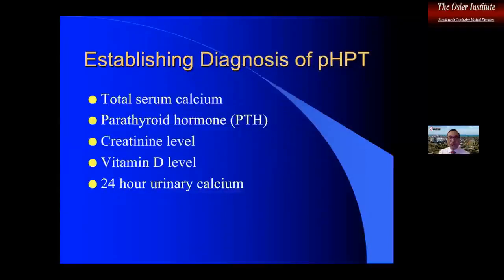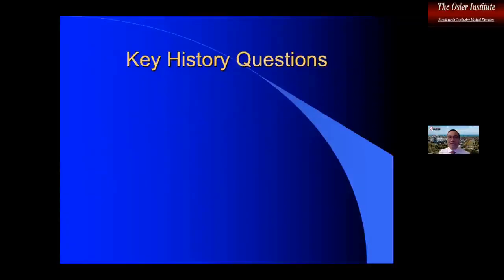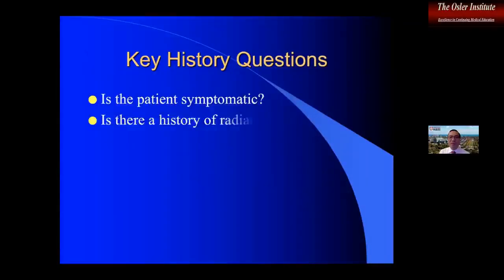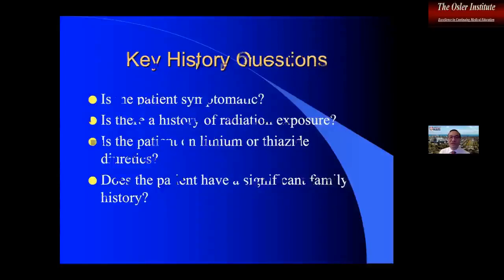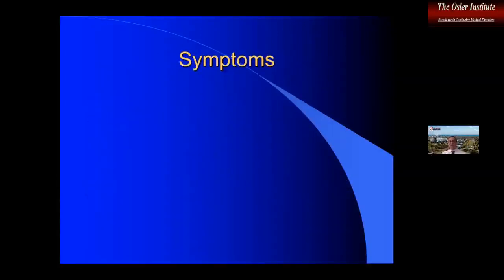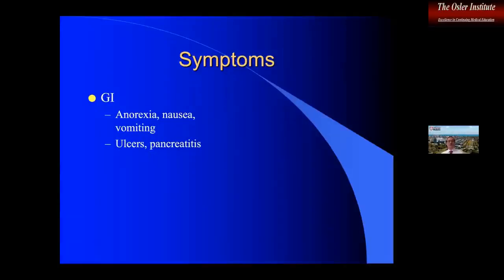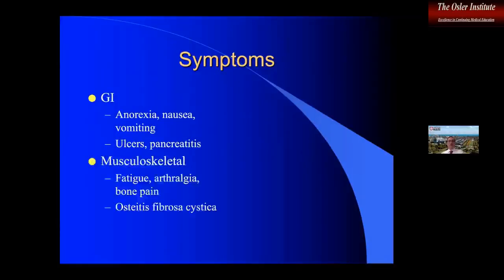Those are your five tests for establishing the diagnosis and ruling out other causes. Now let's talk about the key history questions. My residents know they must ask: Is the patient symptomatic? Is there a history of radiation exposure? Is the patient on lithium or thiazide diuretics? Does the patient have a significant family history? First question: is the patient symptomatic? This leads to the moans, groans, stones, and psychic overtones — GI symptoms including anorexia, nausea, vomiting, ulcers, and pancreatitis.